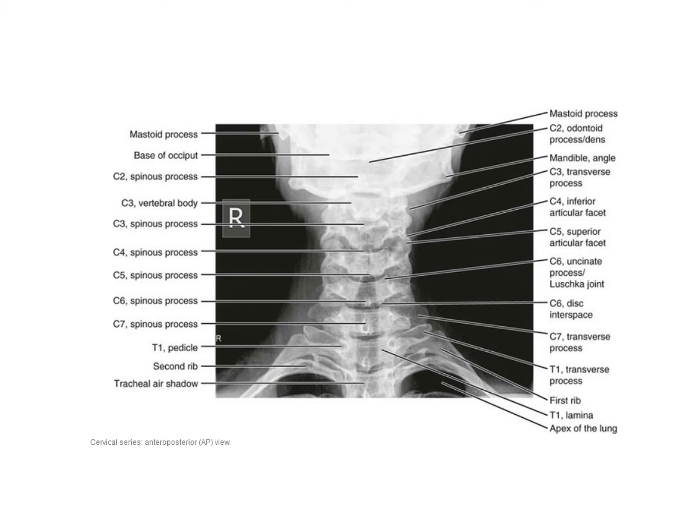The cervical spine anteroposterior view shows the mastoid process, the C2 spinous process, the odontoid process or dens, the atlanto-axial joint and atlanto-occipital joint, then C3 through C7 and T1. Here you can see the tracheal air shadow and the apex of the lung. Also the intervertebral joints can be seen.